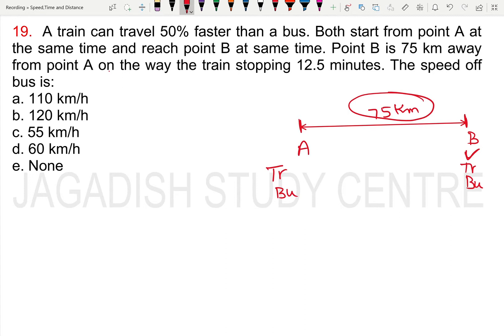For example, the train reaches at 12 o'clock, and the bus also reaches at 12 o'clock. Actually, the train can travel 50% faster than the bus.